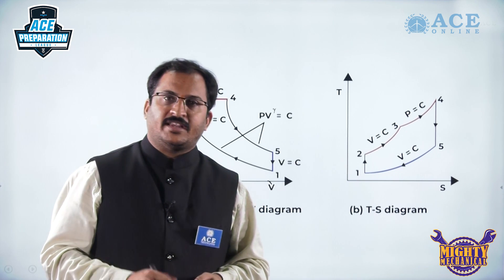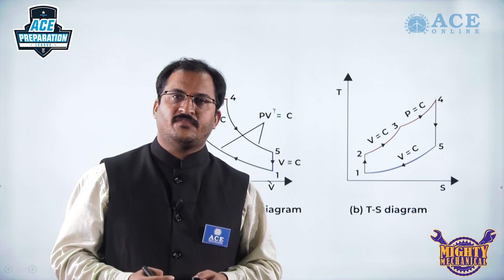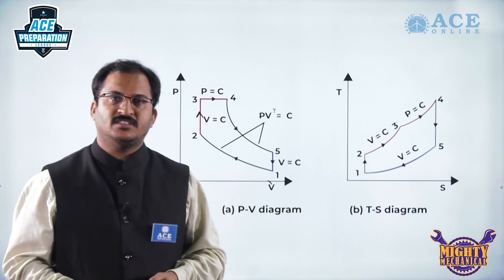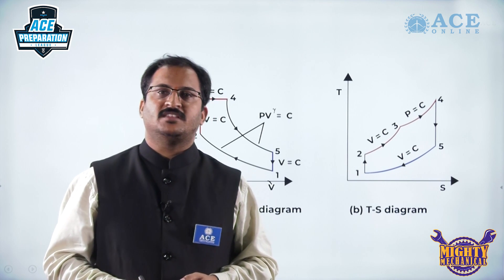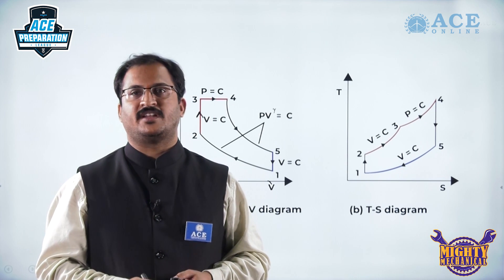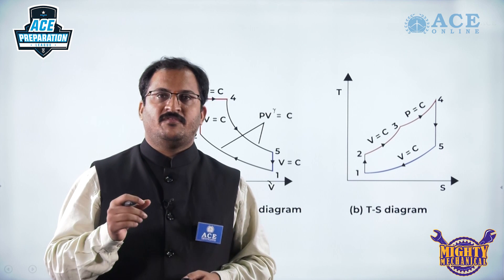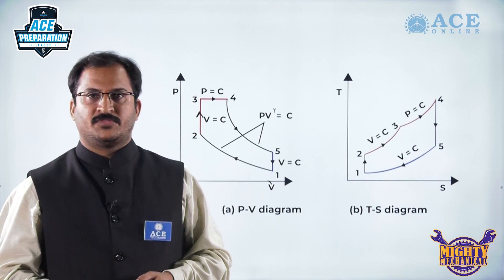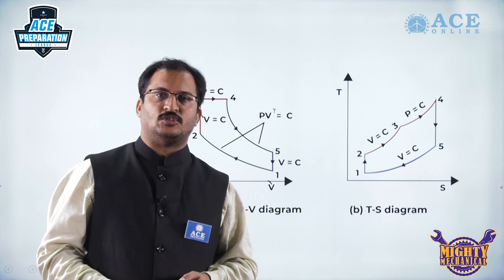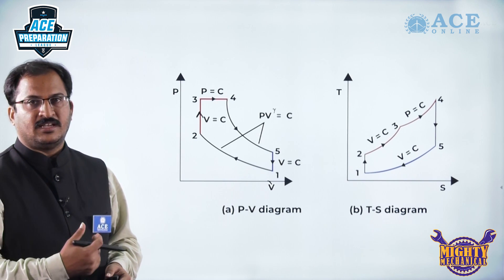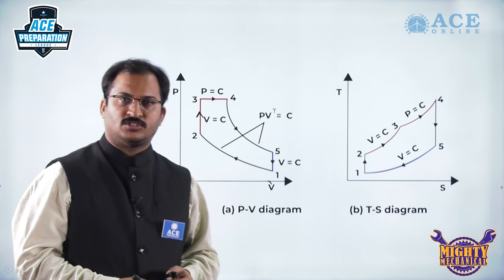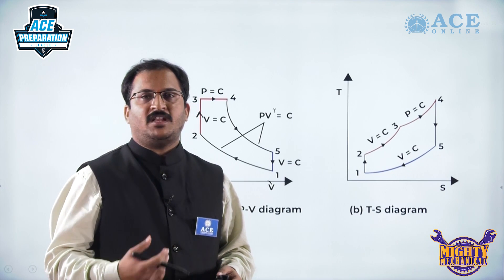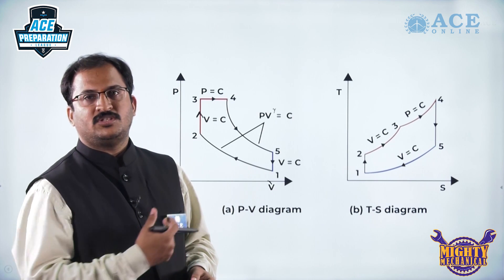When it comes to the ratios, there are four different ratios: compression ratio, cutoff ratio, pressure or explosion ratio, and expansion ratio. Let us examine these four ratios so that we can find the thermal efficiency formula using them.